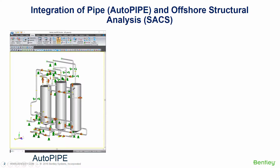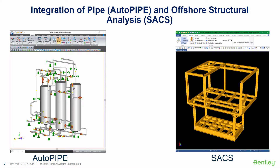Starting with the piping geometry in AutoPipe, which can be imported from a 3D CAD program like OpenPlant, we perform a preliminary analysis to position the piping supports.